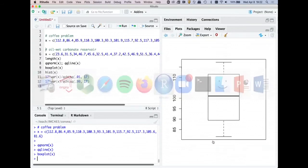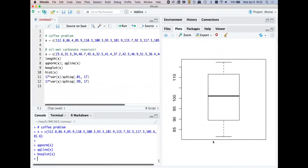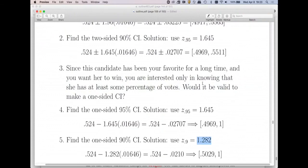If I do Q norm of 0.9, this gives us 1.282. Q norm of 0.95 should be 1.645. So you see where I'm getting those numbers. So that's it for a one-sided confidence interval.